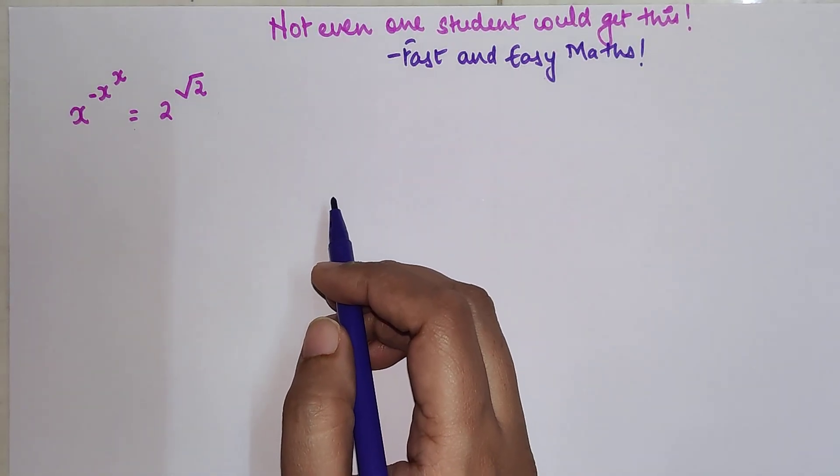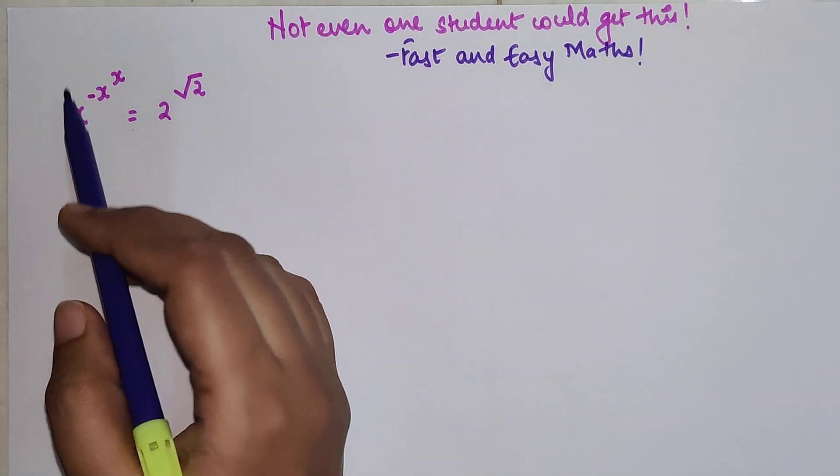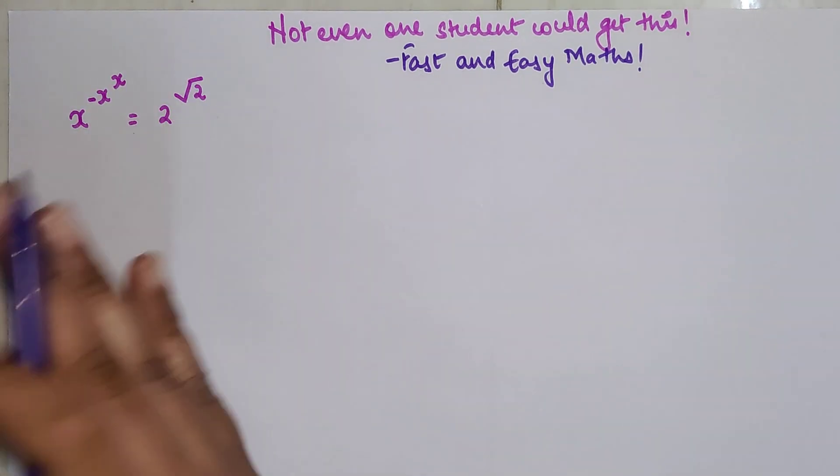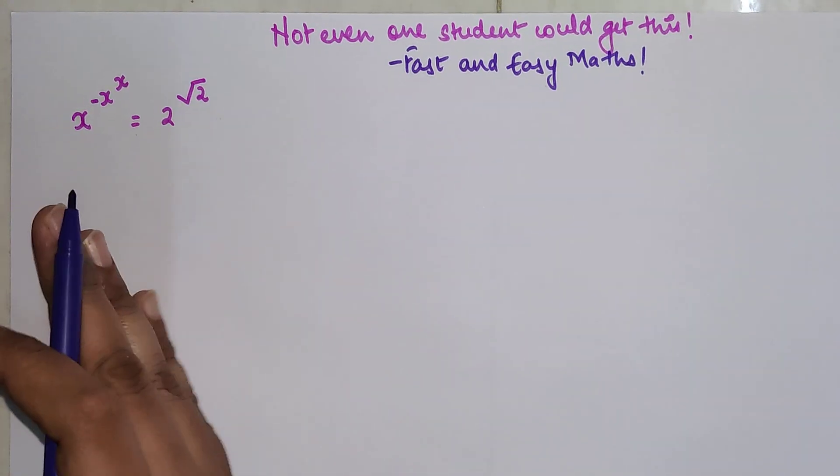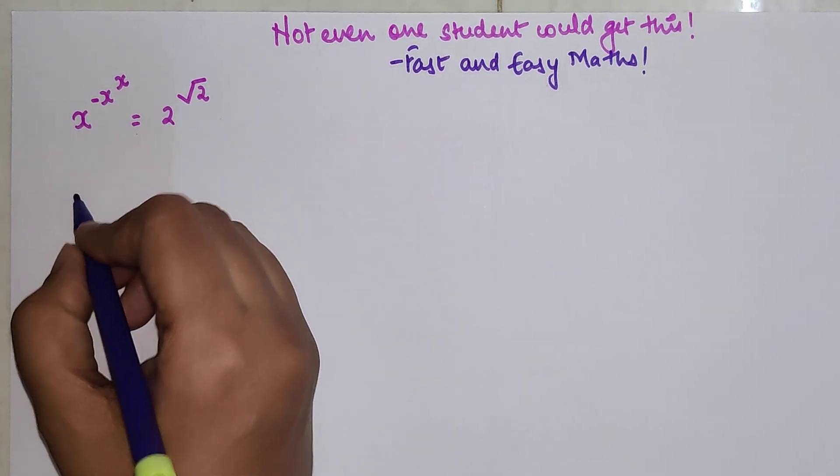Whenever you have something like this, understand that when you have a negative in the index at least on the algebra side of the question, let's shift it on the other side because it's easier to deal with numbers raised to a negative power.